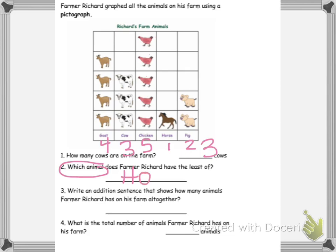This one says write a number sentence that shows how many animals Farmer Richard has on his farm altogether. So we're going to have to write four plus three plus five plus one plus two equals what?